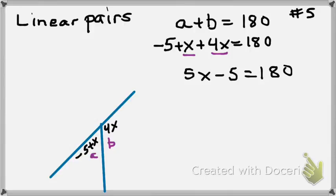Now what? I'm trying to get x by itself. What do I do to get x by itself? Perfect. Add 5 to both sides. That'll give me 5x equals 185.